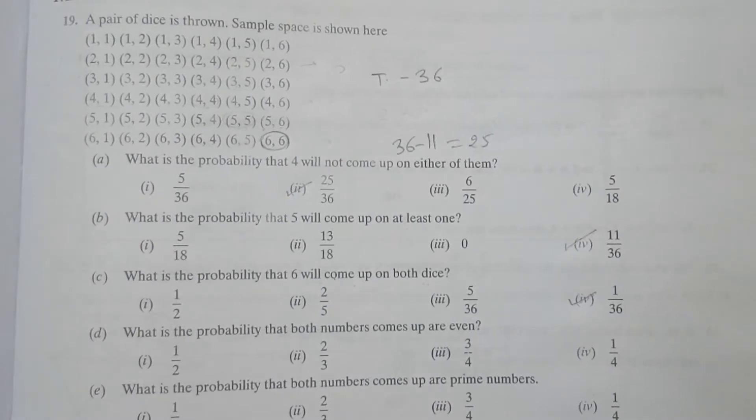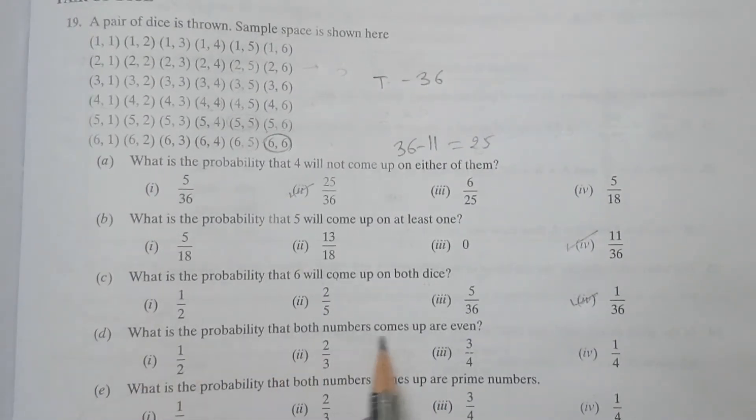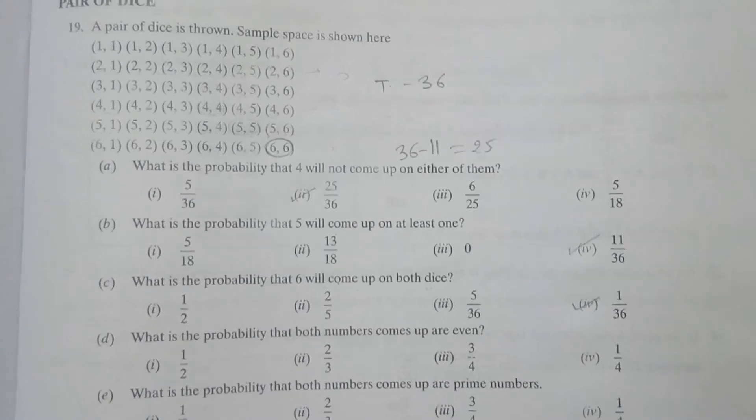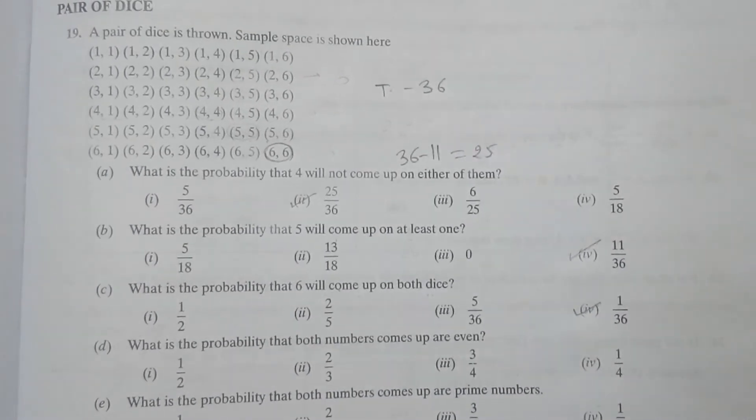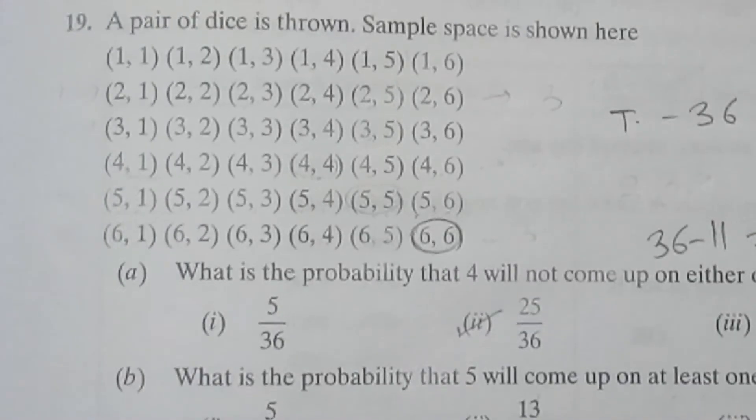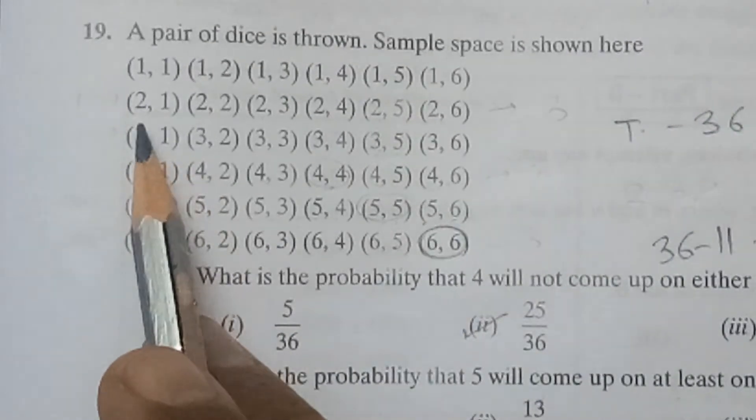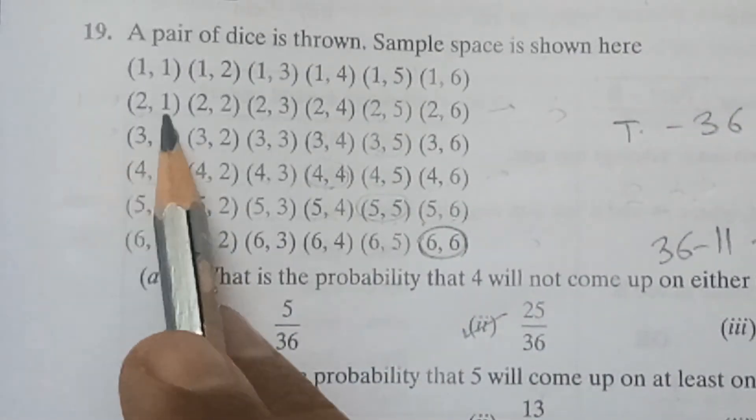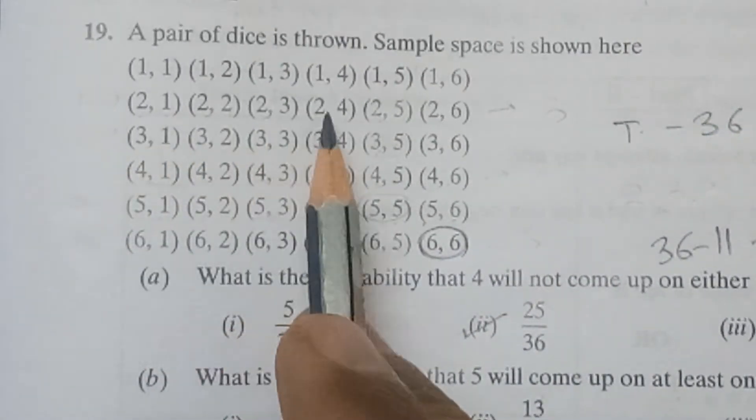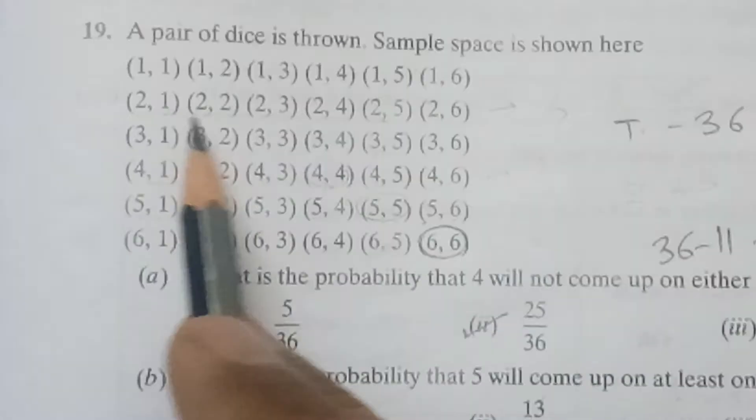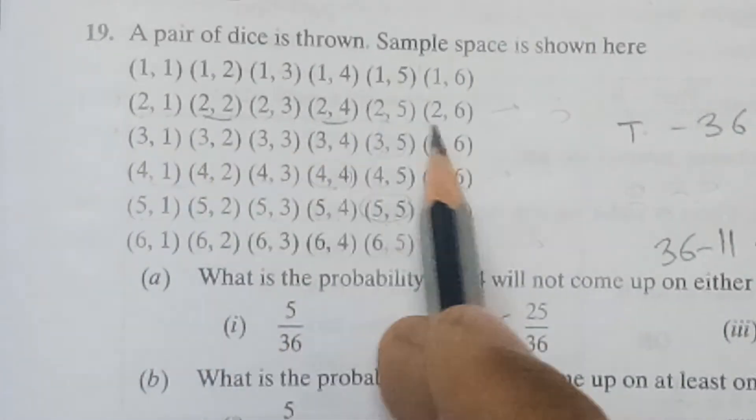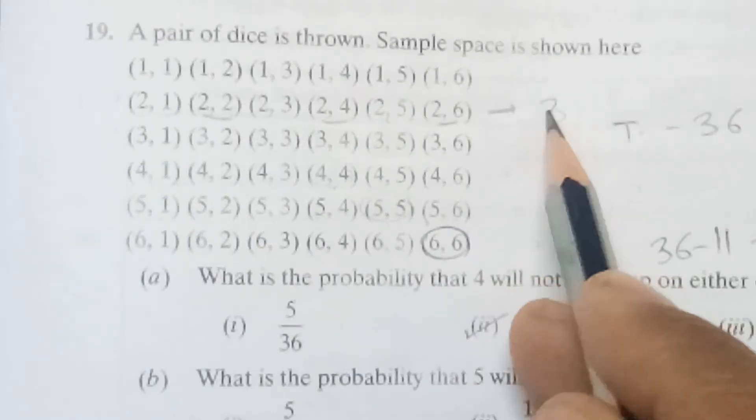Next question is: What is the probability that both numbers come up to be even? So let us check even numbers here. Even numbers will come where the even rows are there: (2,2), (2,4), (2,6) - so 3 are coming here.